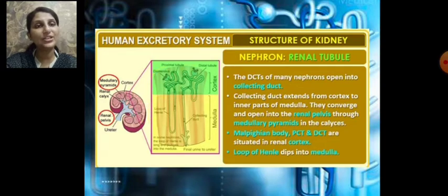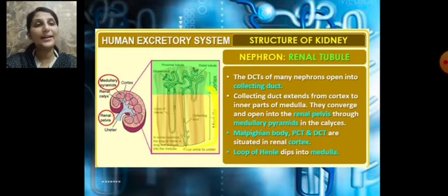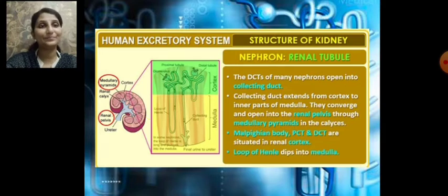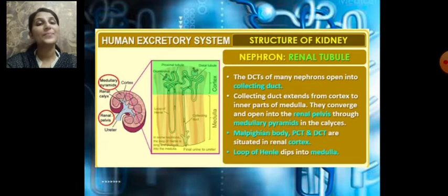The cortical region and medullary part of the kidney can be identified in the diagram. The structures embedded in the medulla are the loop of Henle and the collecting duct. The collecting duct extends from the cortical region into the medullary region, traversing through the medullary pyramids, and converges to open into the renal pelvis.